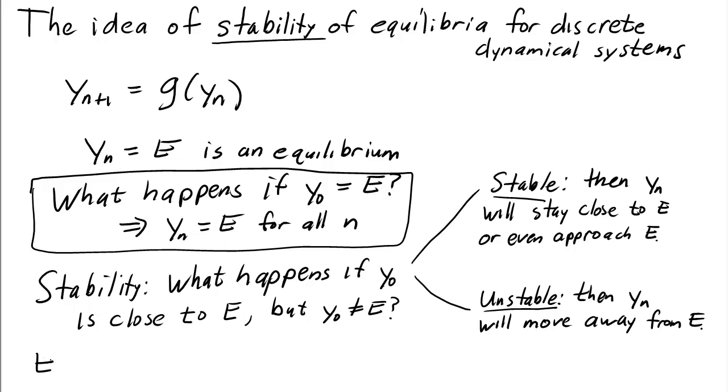Let's use the example function g of y equals one and a half y times one minus y. For which you can calculate that the two equilibria are e equals zero and e equals one third.